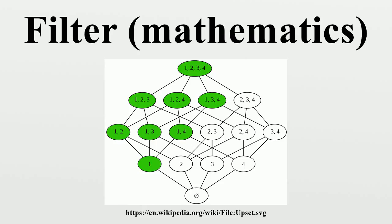Conversely, on a uniform space every convergent filter is a Cauchy filter. Moreover, every cluster point of a Cauchy filter is a limit point. A compact uniform space is complete. On a compact space each filter has a cluster point, and if the filter is Cauchy, such a cluster point is a limit point. Furthermore, a uniformity is compact if and only if it is complete and totally bounded. Most generally, a Cauchy space is a set equipped with a class of filters declared to be Cauchy.